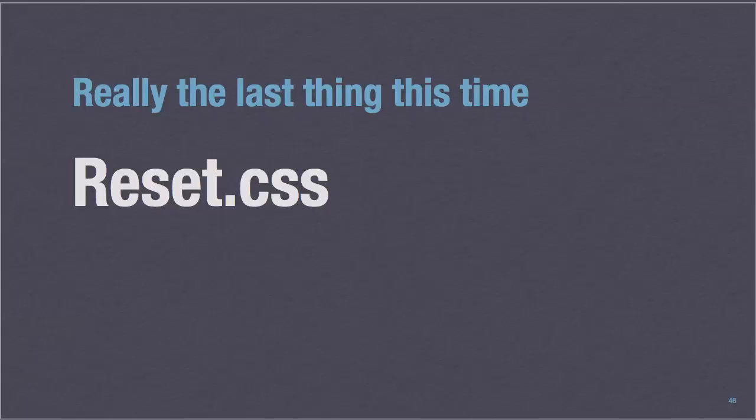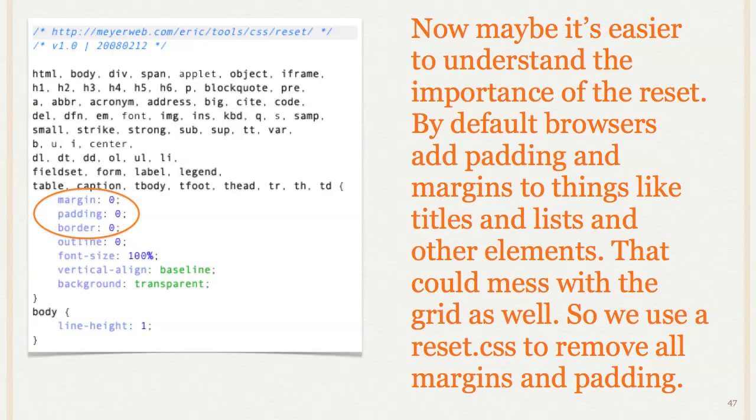Okay, and then this also plays into the concept of the reset CSS that we use. So really the last thing I'm going to cover. And it's very important that you include the reset style sheet in it. And basically what it does is it just zeroes out your margin, padding, and borders. And that's because, by default, most browsers add a certain amount of padding, margin, or borders to some elements, like the H elements or the list elements and things like that.